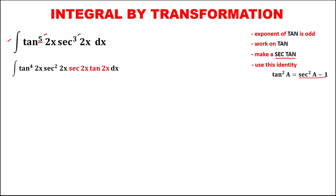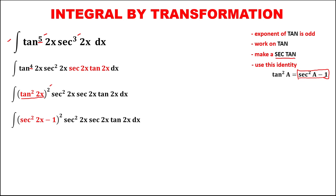To have secant times tangent, continue working on tangent using the identity that tangent squared equals secant squared minus 1. First, rewrite tangent to the power 4, 2x, as tangent squared, 2x, quantity to the power 2, so we can apply the identity for tangent squared. This becomes secant squared 2x minus 1, quantity to the power 2, which expands to secant to the power 4, 2x, minus 2 secant squared 2x, plus 1.